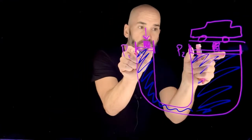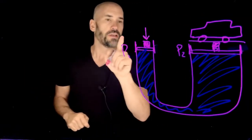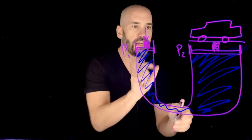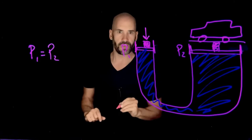If these pressures were different, you'd have things like moving up or down, like that. Makes sense? So what we know is at this point here and this point here, P1 must equal P2.